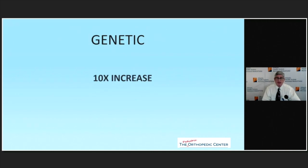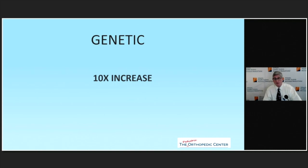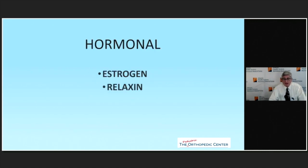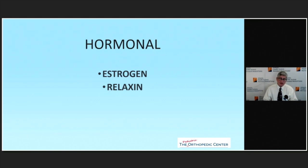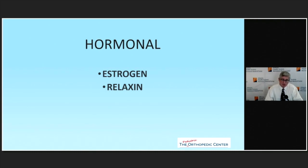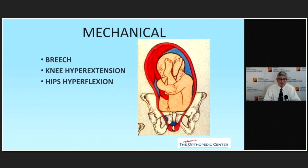As far as etiology goes, genetics plays a role, as do hormonal influences and mechanical factors. If a child has hip dysplasia, a first-degree relative has a ten times greater risk — so instead of one in a thousand, it becomes one in a hundred. If two relatives are affected, it becomes a ten percent chance. Hormonally, the placenta gives off estrogen and relaxin, which allow the hip joint to be more lax and dislocatable.